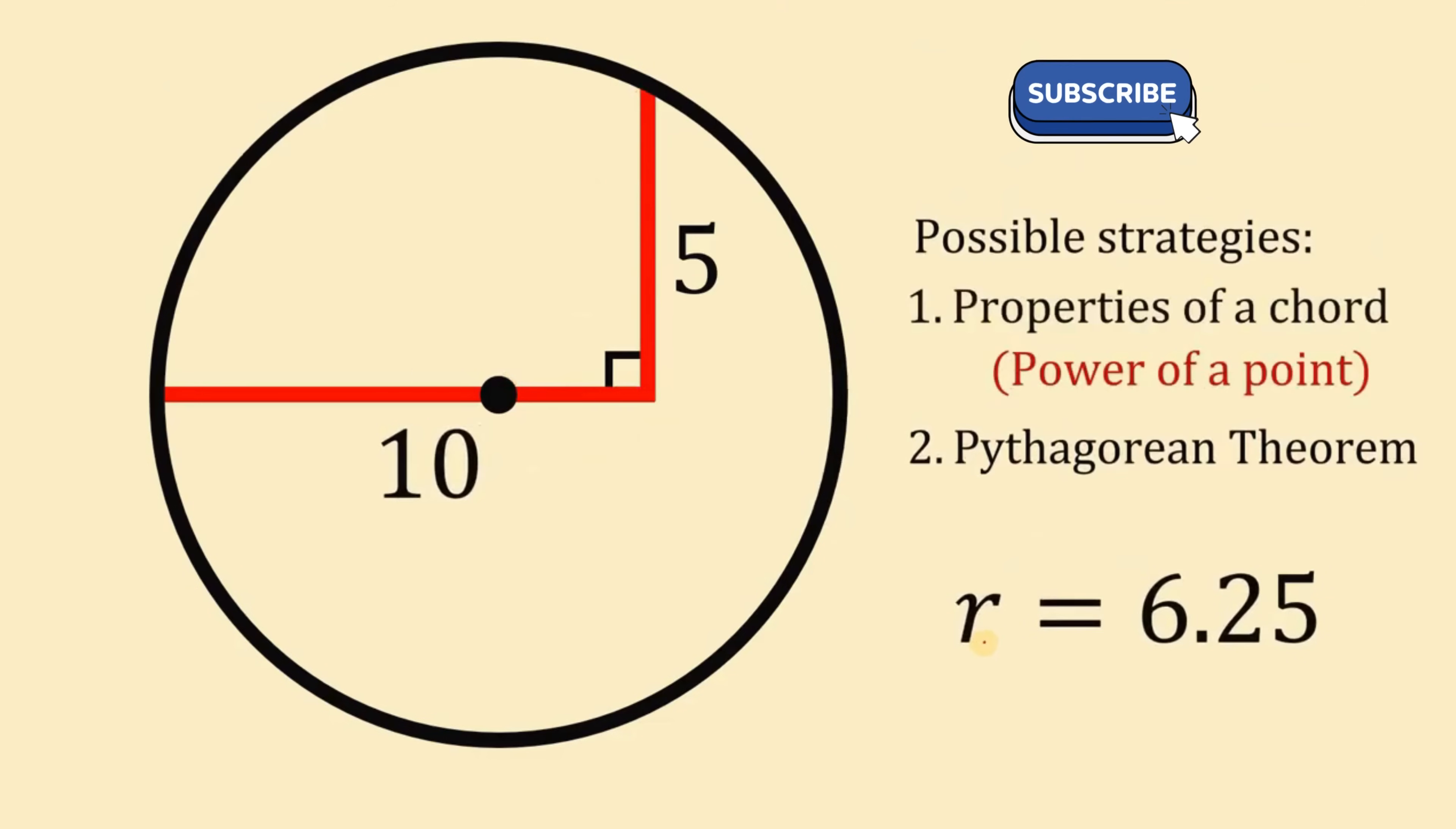Therefore, using any of these two possible strategies, properties of chords and power of a point, or simply the chord-chord power theorem, and using the Pythagorean theorem, we get the same answer as the length of the radius of the circle must be equal to just 6.25 units given this condition. And as always, we are done.